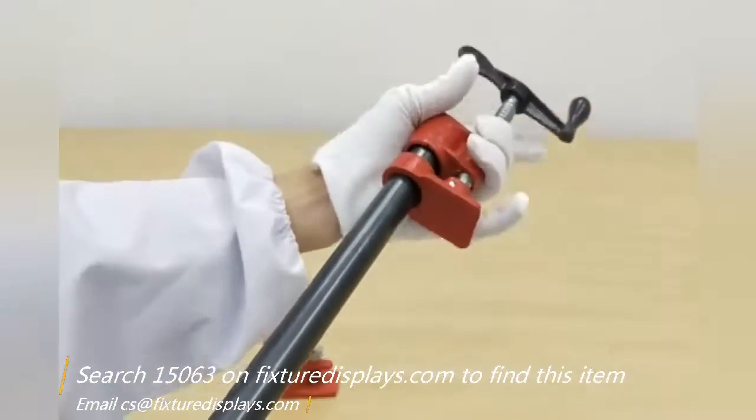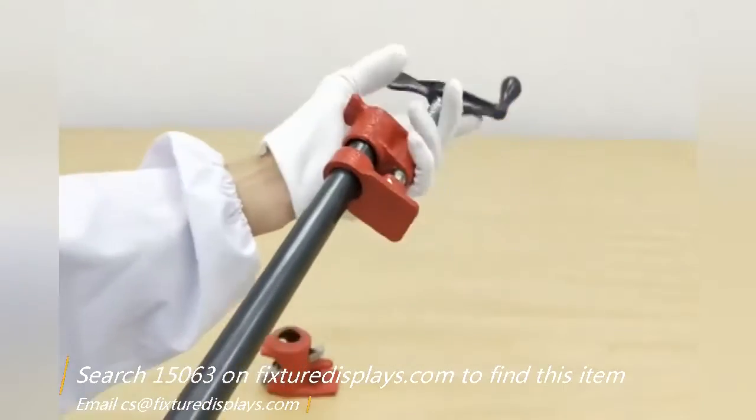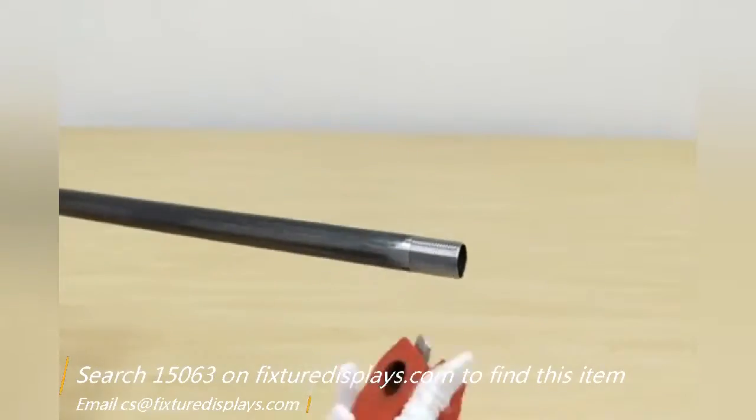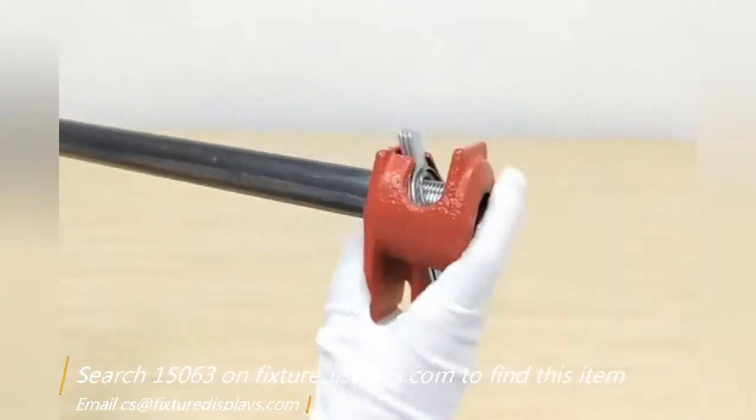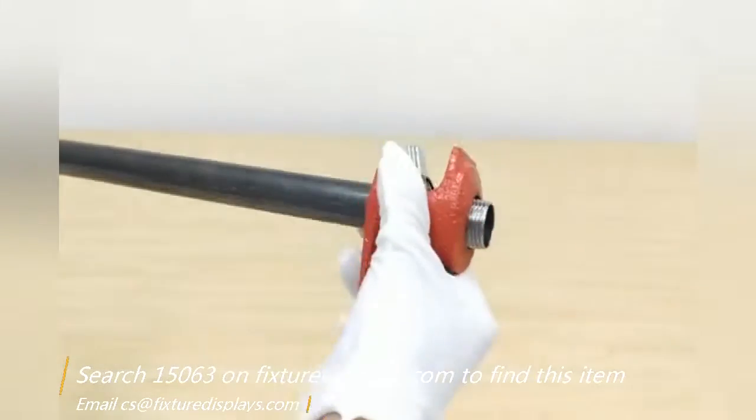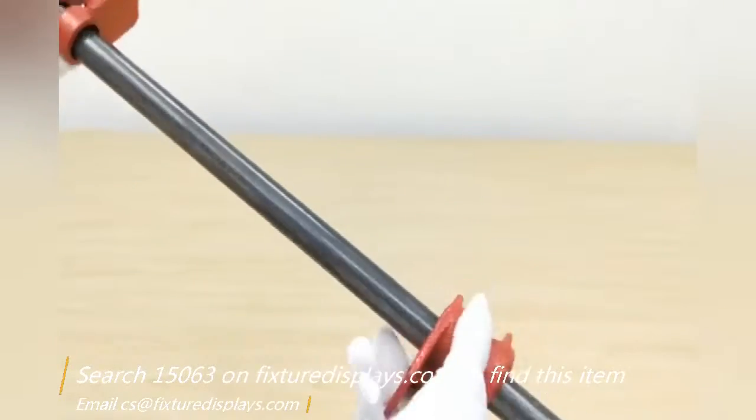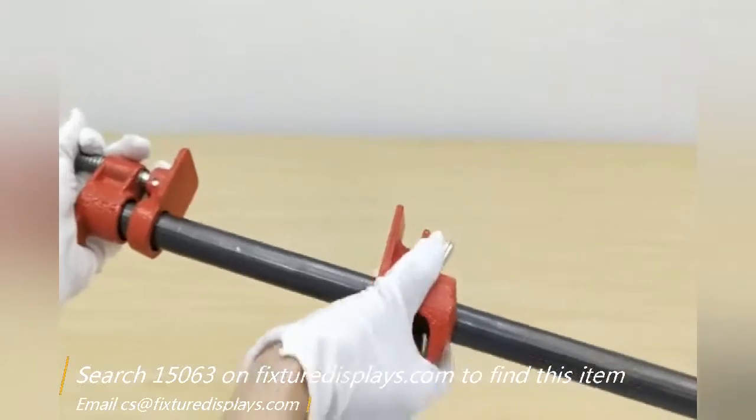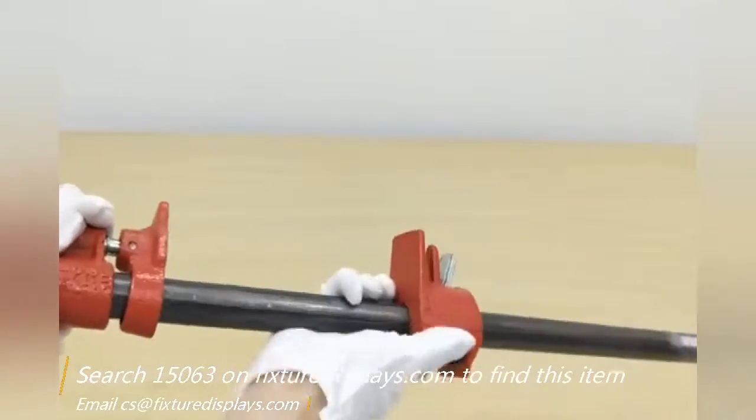So you want to thread the tube into the cranking part, and then slide the mobile part onto the tube. Now you're ready to put some wood in between.